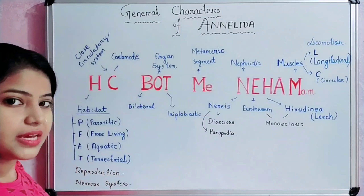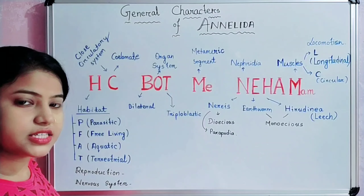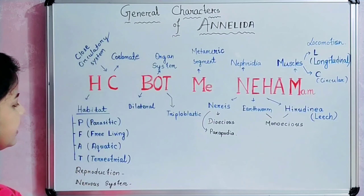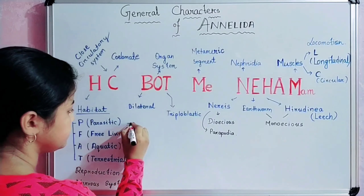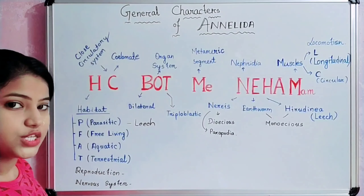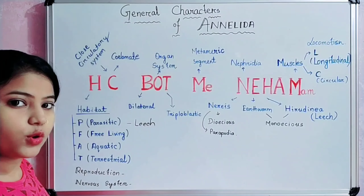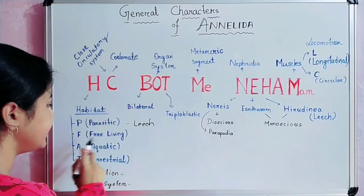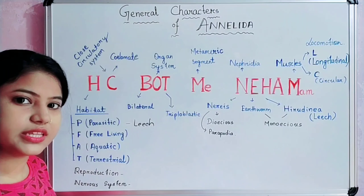H means Habitat — the habitat of Annelida animals. They live in a parasitic form, like leech. Leech lives as a parasite, meaning leech depends upon other organisms for their survival. They are also free-living, meaning they don't depend upon any other organism for their survival.